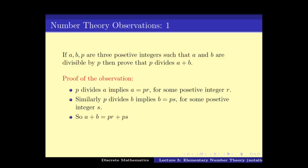So what is a plus b? a plus b is p times r plus p times s, which is of course p times (r plus s). Now since r is a positive integer and s is a positive integer, r plus s is also a positive integer. In other words, p divides a plus b, because a plus b is written as p times (r plus s) where r plus s is a positive integer. It's a very easy observation that follows from the basic definition of division.